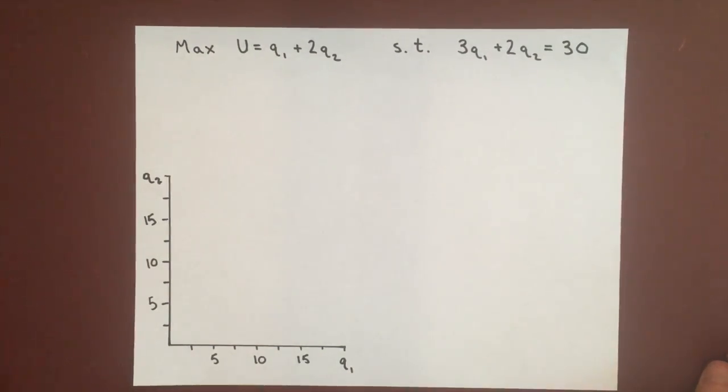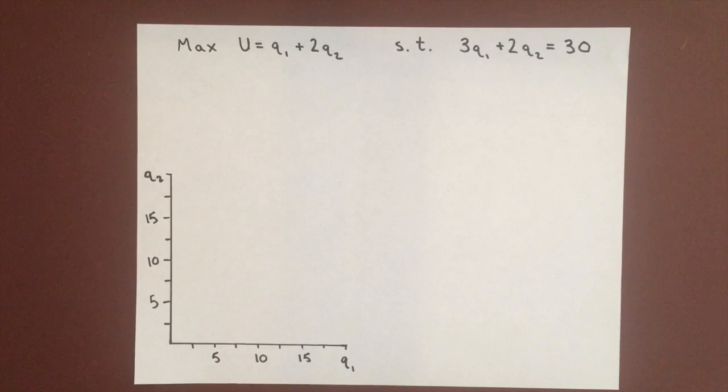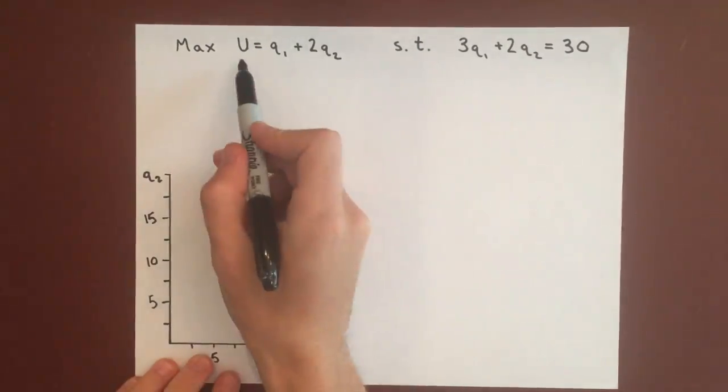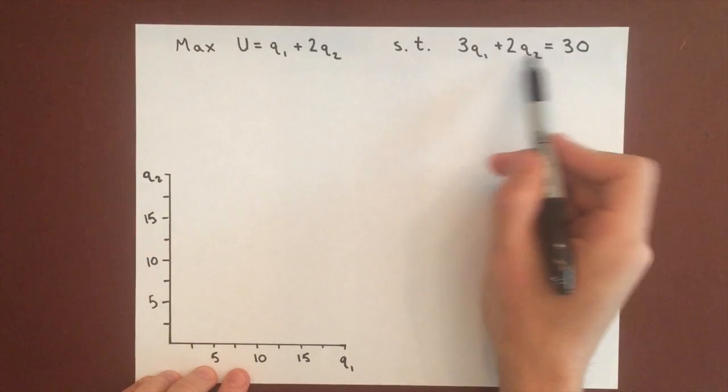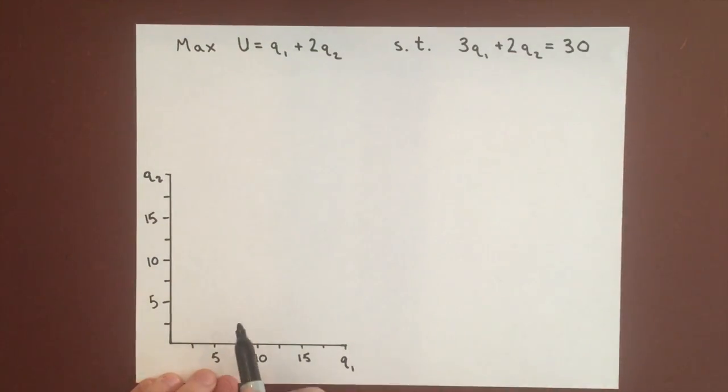In this video we're going to look at an example of maximizing utility given a budget constraint for a perfect substitute utility function. Here's our utility function and here is our budget constraint, and we're just going to graph this to get an idea of what's going on.